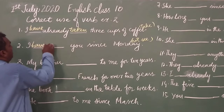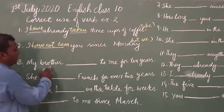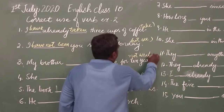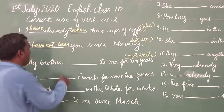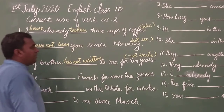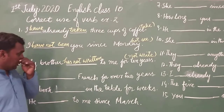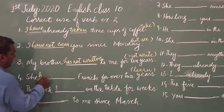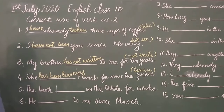I have not seen you since Monday. Sentence three: 'My brother dash to me for ten years' — this requires present perfect tense with 'not write', so it becomes: My brother has not written to me for ten years. Sentence four: 'She dash French for over two years' — the answer is: She has been learning French for over two years.